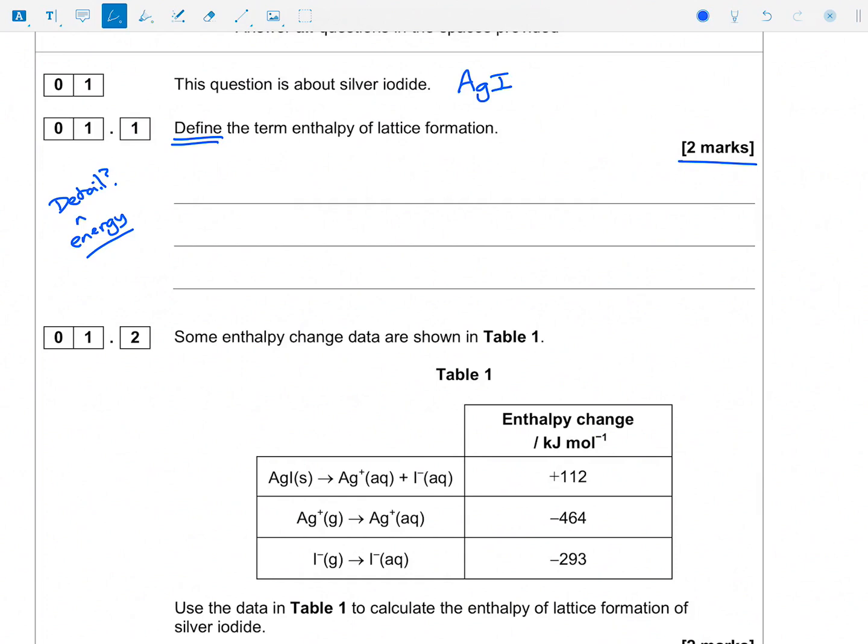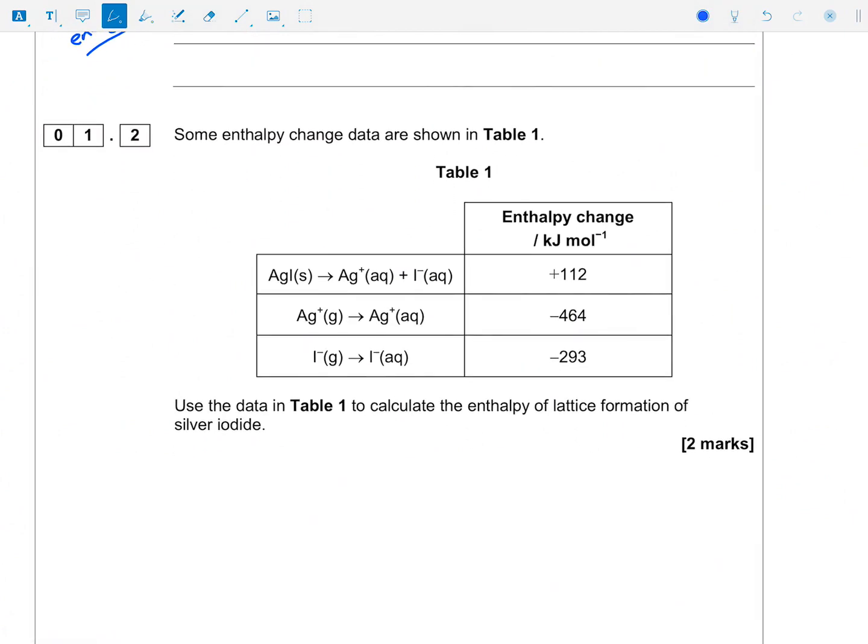1.2 - we got some enthalpy change data in Table 1. Okay, so they're not all the same type of enthalpy change because they've just got this vague kind of enthalpy change here. Well, let's figure out what they are first of all.